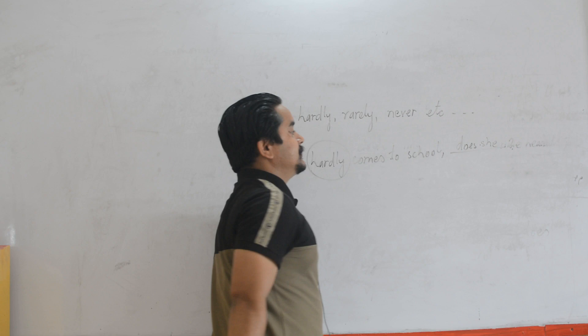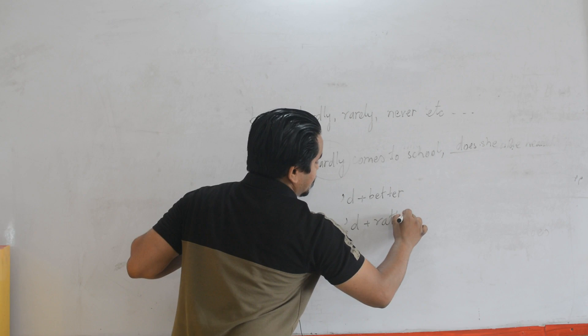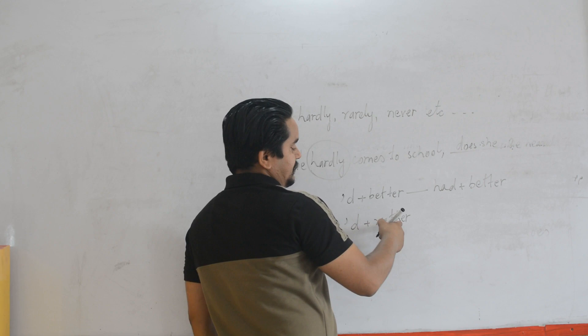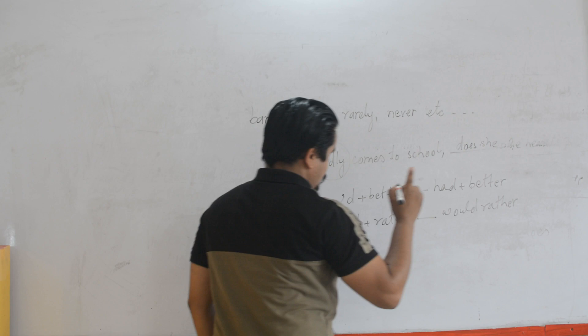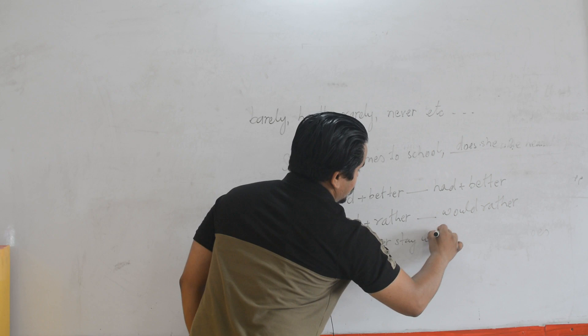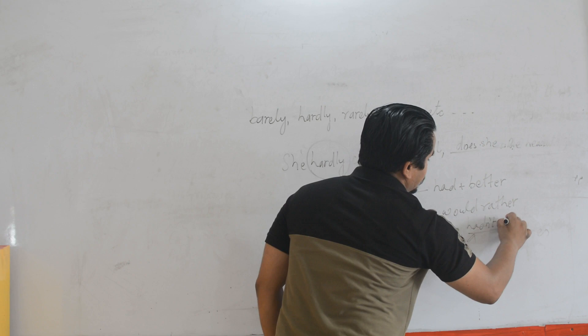Likewise, if there is apostrophe-D followed by 'better', and apostrophe-D followed by 'rather', then we follow in this way. Apostrophe-D followed by 'better' is called 'had better'. Apostrophe-D followed by 'rather' is 'had rather'. For example: 'You'd better stay with us.' The same 'had' — we use it in the question tag, so: 'You'd better stay with us, hadn't you?' The same sort of rule we apply for 'rather'.